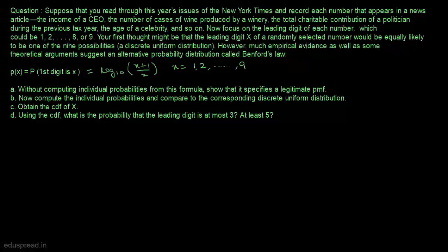In this lecture we are going to solve this question: suppose that you read through this year's issues of the New York Times and record each number that appears in a news article — the income of a CEO, the number of cases of wine produced by a winery, the total charitable contribution of a politician during the previous tax year, the age of a celebrity, and so on.